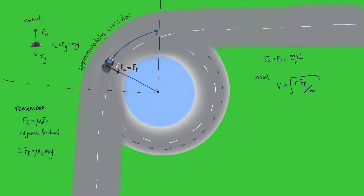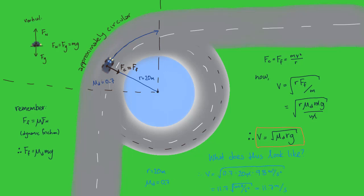Rearranging these equations, we find that the speed can be written as the square root of mu times gr. To look at some numbers, a car navigating a bend with a radius of 20 metres and a coefficient of dynamic friction of 0.7 could travel around the bend at a maximum speed of 11.7 metres per second. This is equal to 43.1 kilometres per hour.